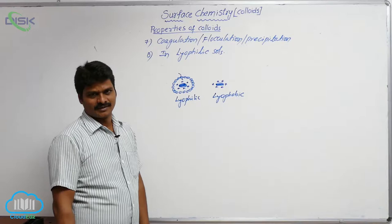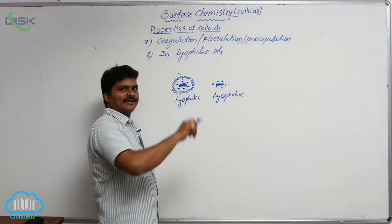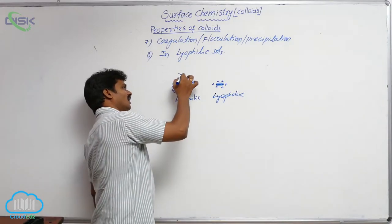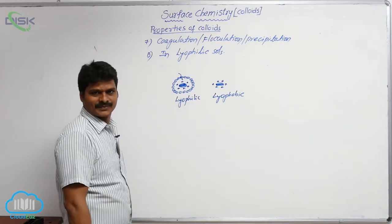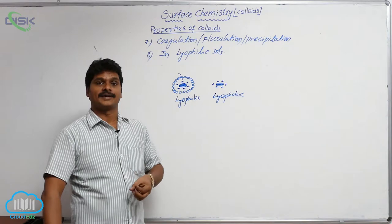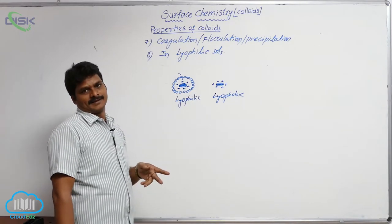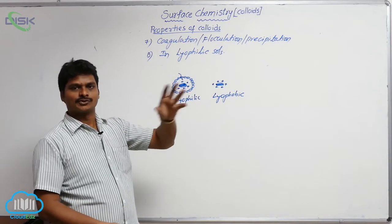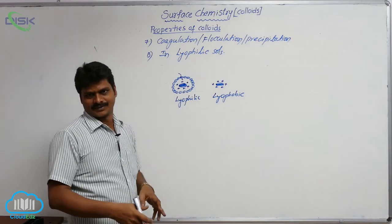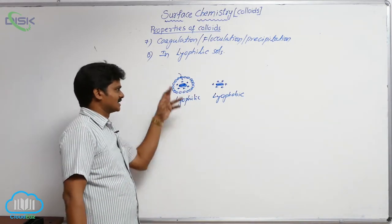To coagulate a lyophilic sol, there are two stabilizing factors: the charges in the fixed layer and the layer of solvent molecules around the colloidal particles. We must first break the solvent layer and then neutralize the charges. For hydrophilic sols, a co-solvent such as acetone or ether is added. The acetone or ether simply breaks the layer of solvent molecules through hydrogen bonding.